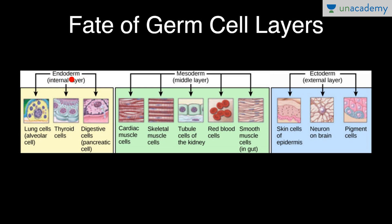Endoderm is the internal, that is the innermost layer. Lung cells, alveolar cells, thyroid cells and digestive cells, that is pancreatic cells — these are derived from endoderm.